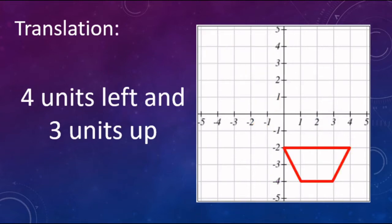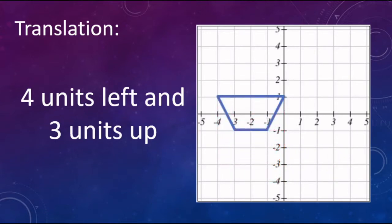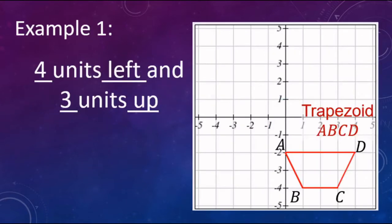We can also do it with shapes like this trapezoid here. We're going to do the same thing: four to the left — one, two, three, four — and three units up — one, two, three. And there's the image of the trapezoid after a translation four to the left and three up.